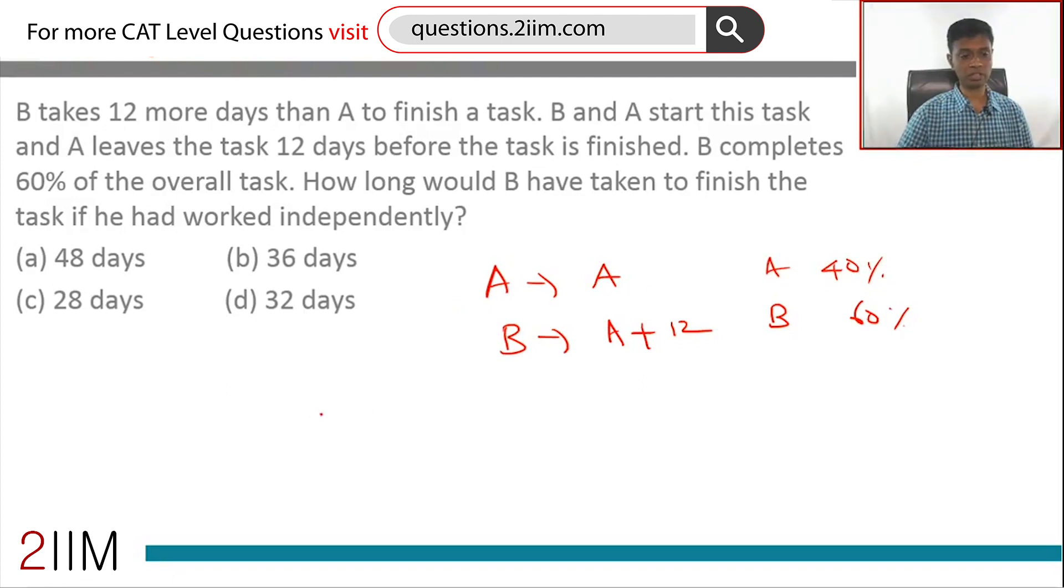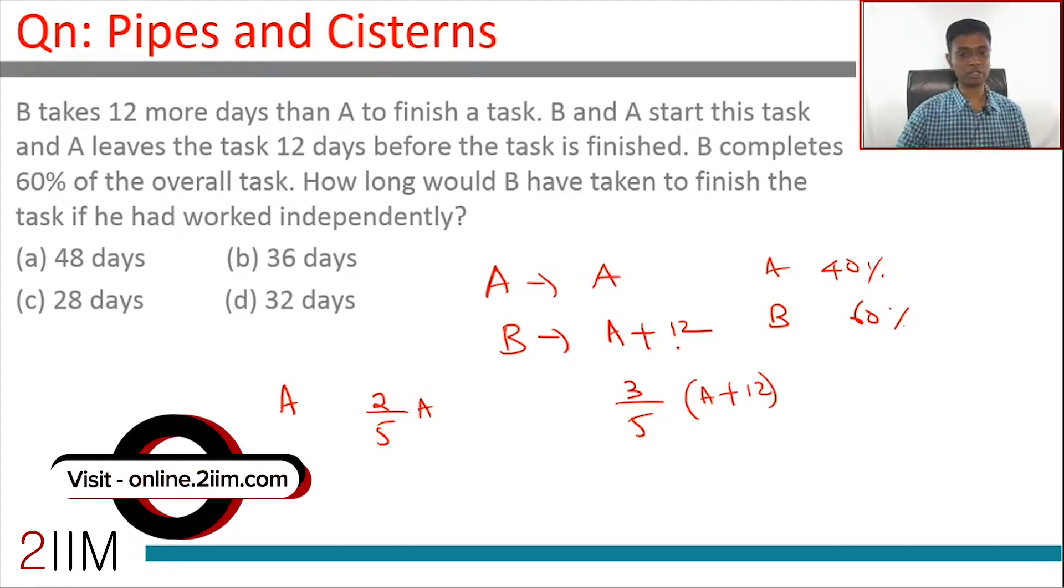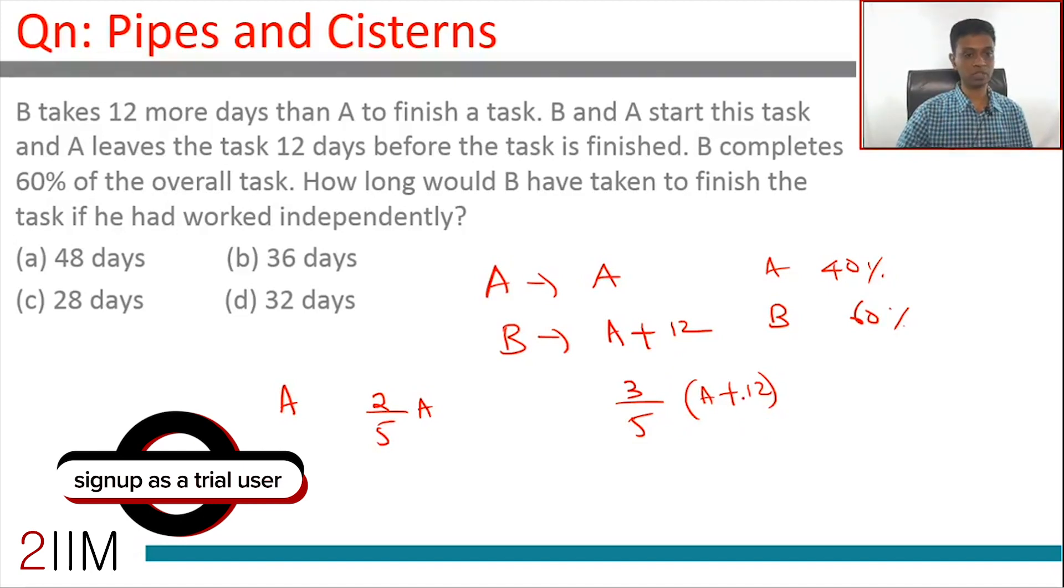To finish 40% of the task, A would take 2/5 * a days. To finish 60% of the task, B would take 3/5 * (a + 12) days. To finish the entire task, B takes a + 12 days. To finish 60%, you would take 60% of a + 12, or 3/5 times a + 12. A works for 2/5 * a days, B works for 3/5 * (a + 12) days.